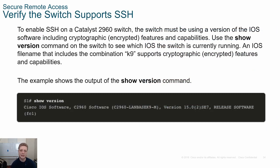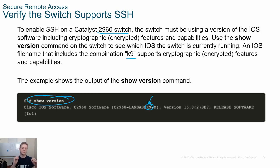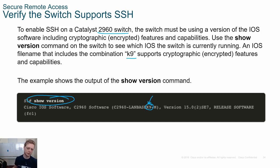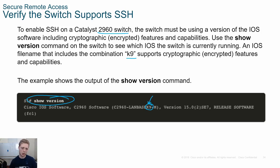SSH is really what we're going to use in every case we can. To activate SSH on a switch, we need a few things. First, run the 'show version' command and verify there is a 'K9' in the image name — that means it supports encrypted features. Some IOS versions don't support cryptographic features because certain countries, like China, have laws against encryption to enable mass surveillance.